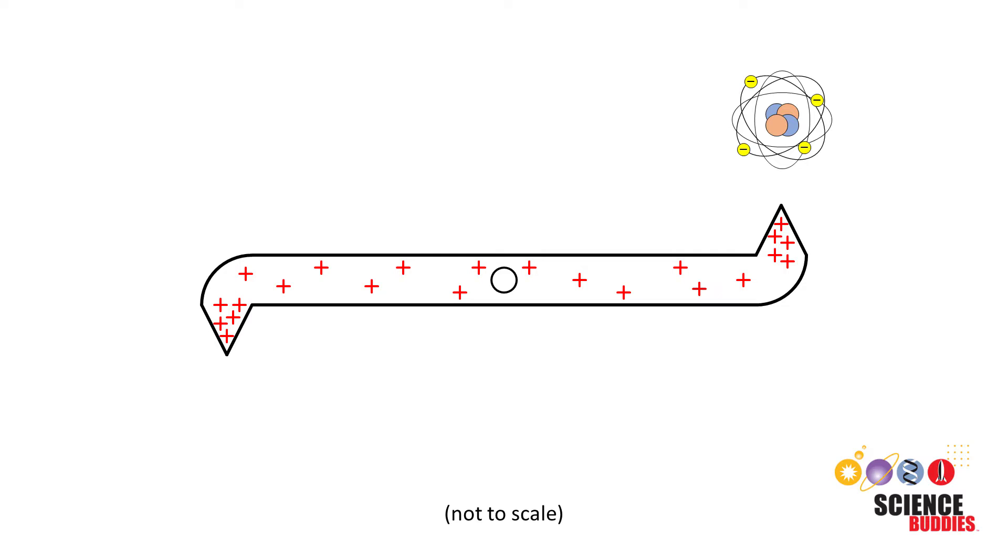This concentration of positive charge strips negatively charged electrons from nearby air molecules, turning them into ions with a net positive charge. The now positively charged ions are repelled from the positively charged tip of the rotor. According to Newton's third law of motion, for every action there is an equal and opposite reaction, so this means the ions also push back on the rotor.